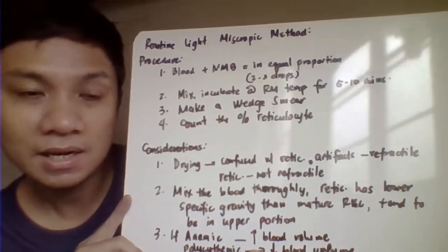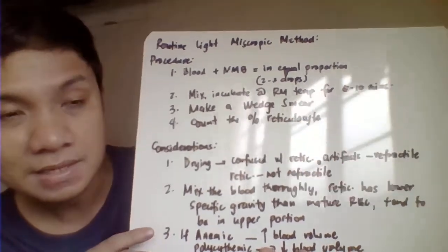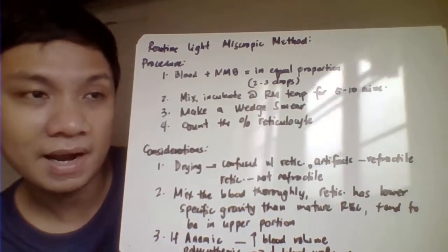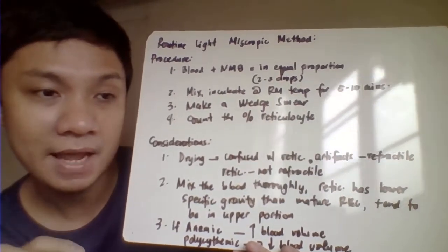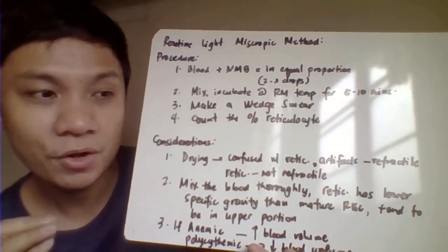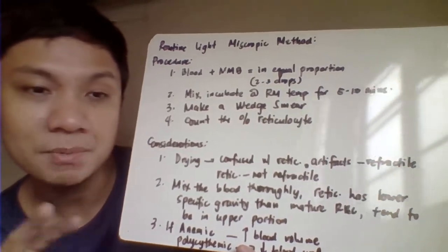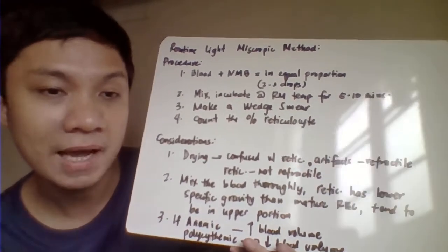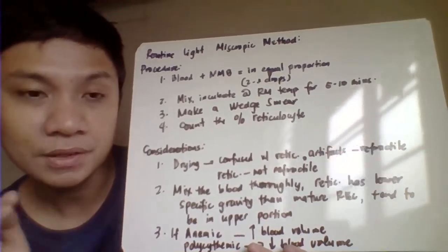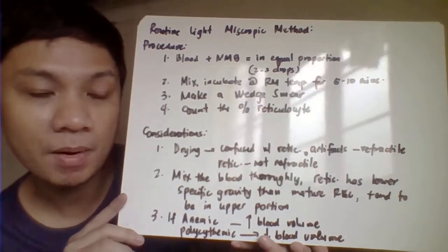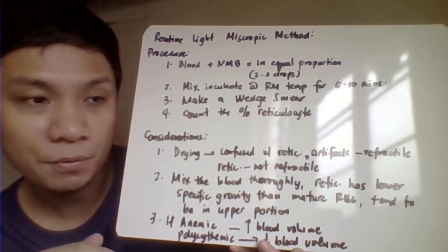You also need to adjust the volume of blood relative to anticoagulant ratio for anemic or polycythemia vera patients. For anemic patients with less blood, increase the volume of blood used. For patients with very thick blood (polycythemia), decrease the volume of blood compared to the volume of new methylene blue stain.